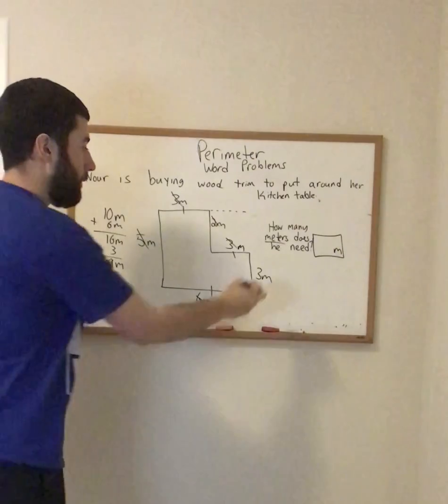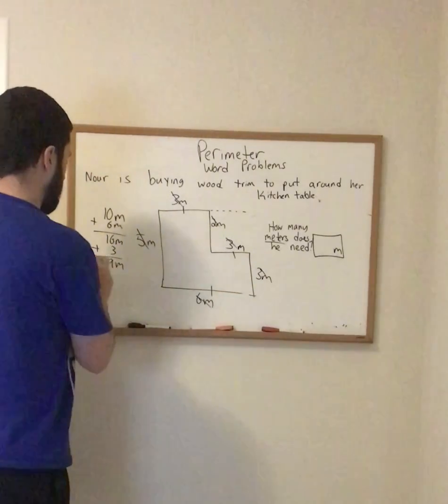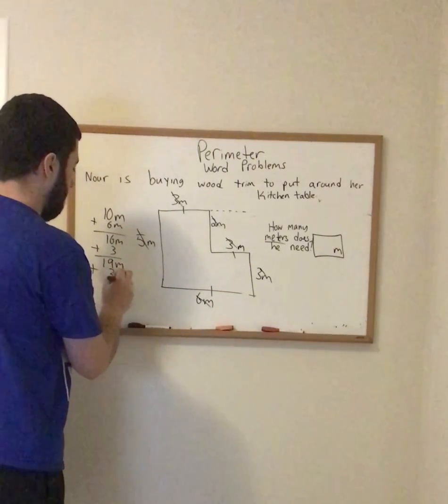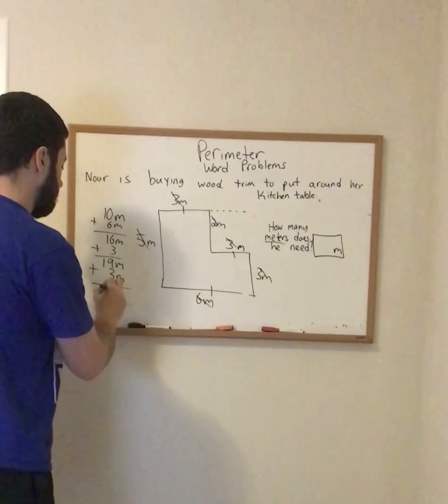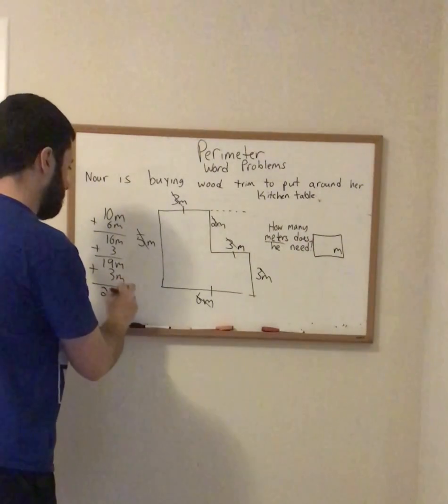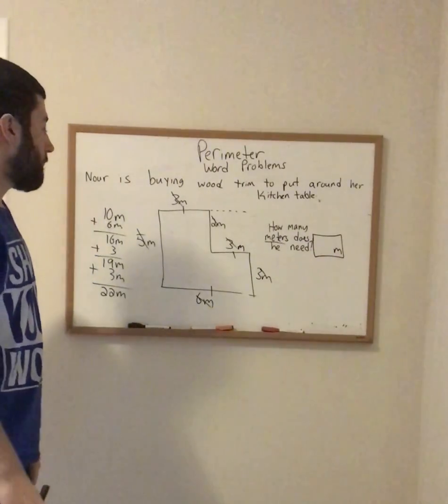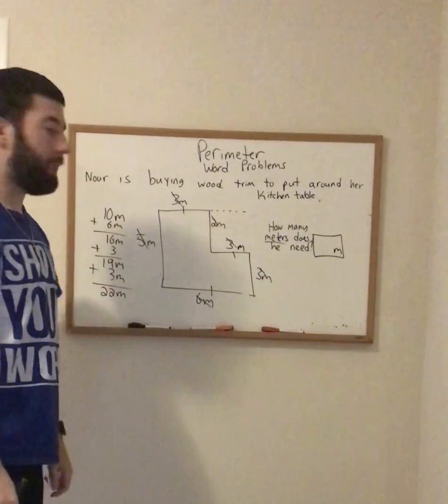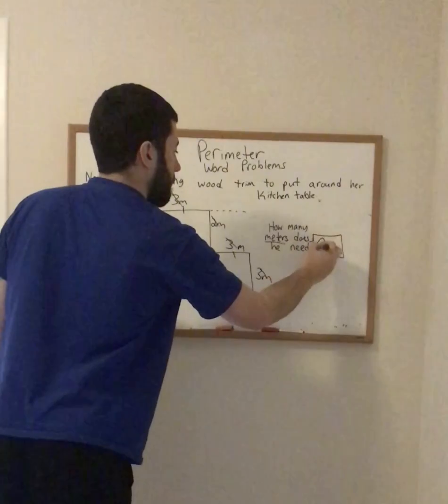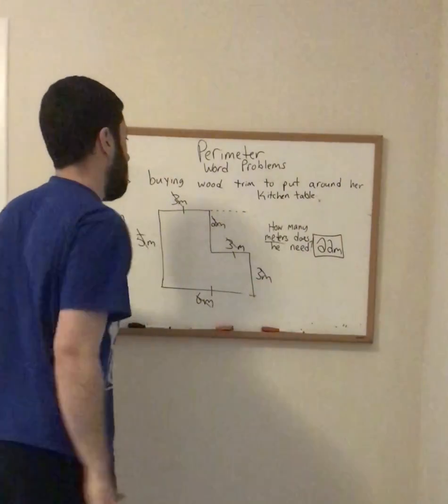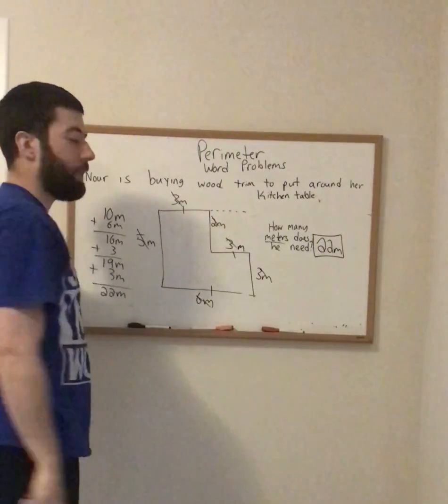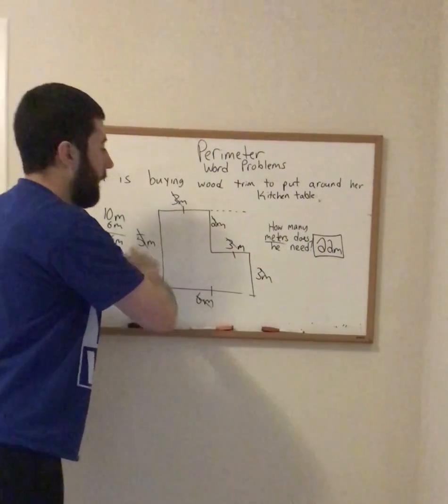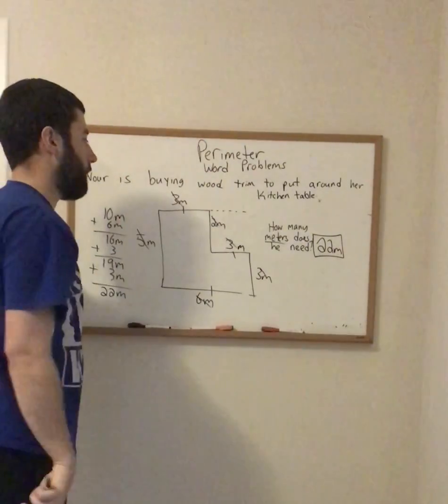And then my last 3 meters, which would be right here. And I would get 20, 21, 22. 22 meters. So how many meters does he need? He would need 22 meters. How did I figure that out? I first solved my missing part, and then I added up all my meters to get my perimeter.